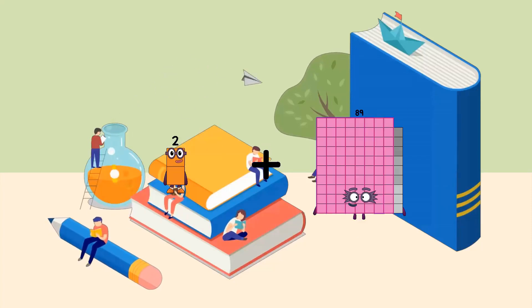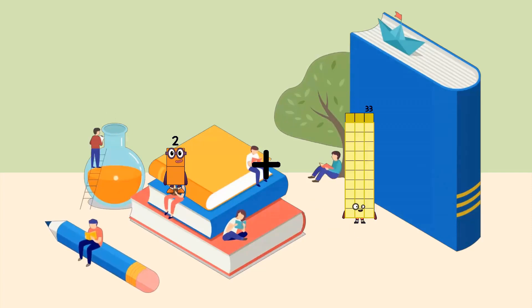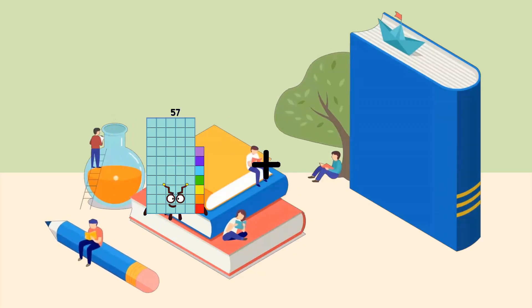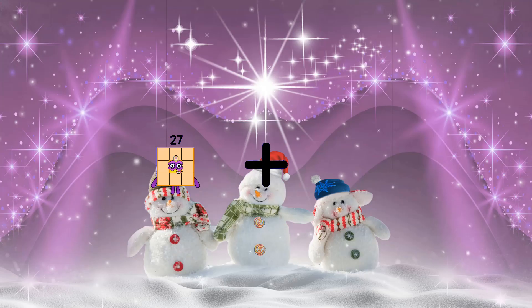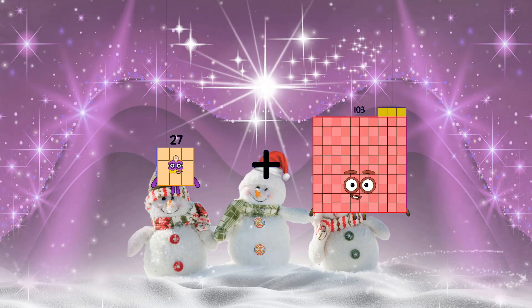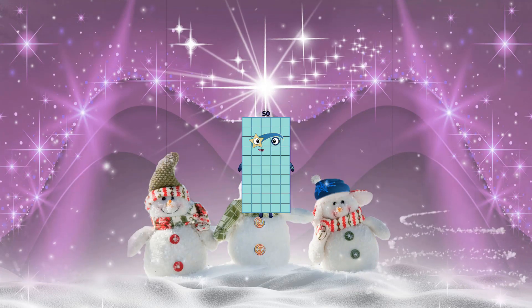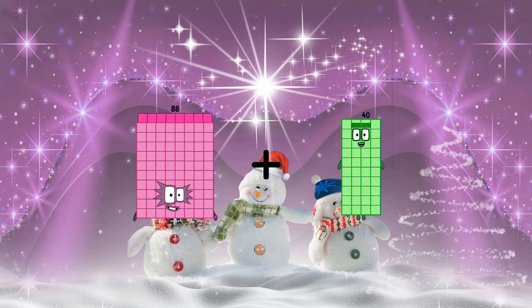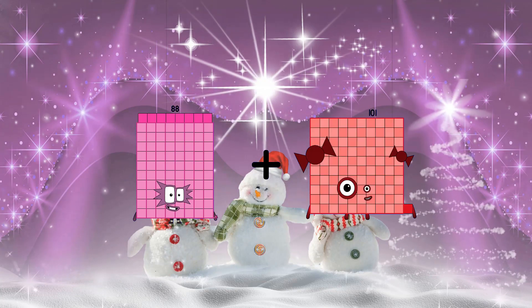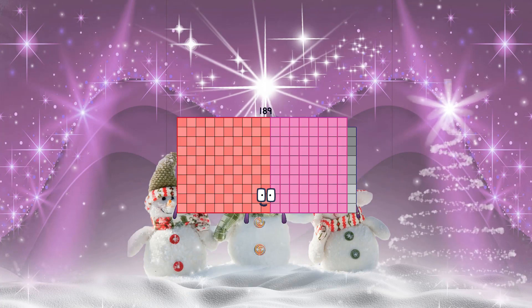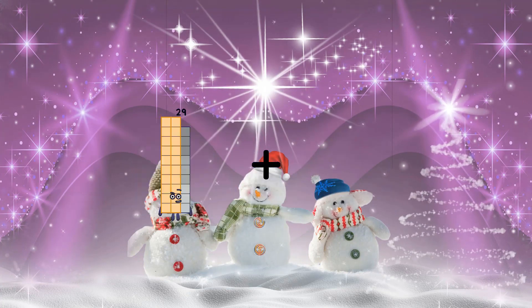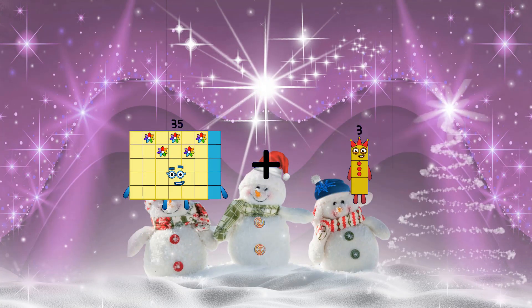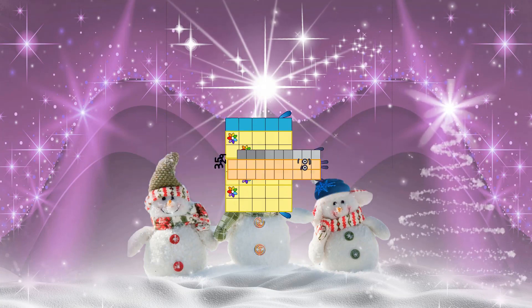2 plus 69 equals 71. 27 plus 23 equals 50. 88 plus 101 equals 189. 35 plus 29 equals 64.